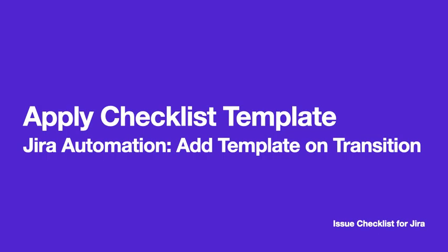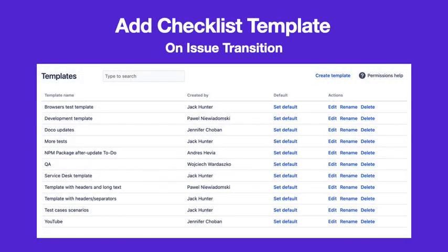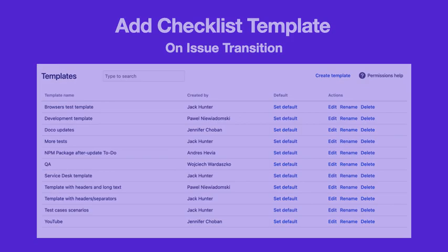Checklist templates allow you to standardize processes across JIRA issues. This video will show you how to use JIRA automation to add a template when an issue is transitioned.